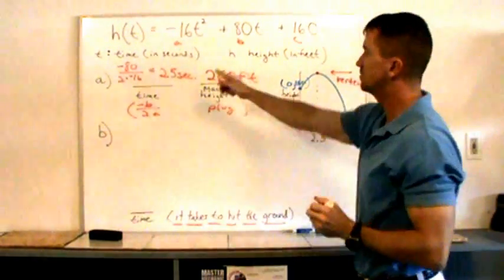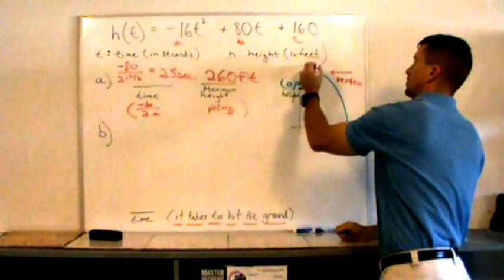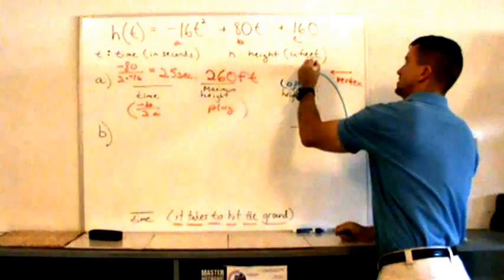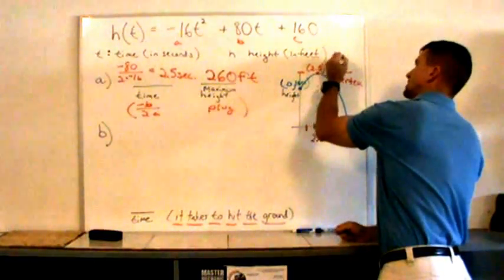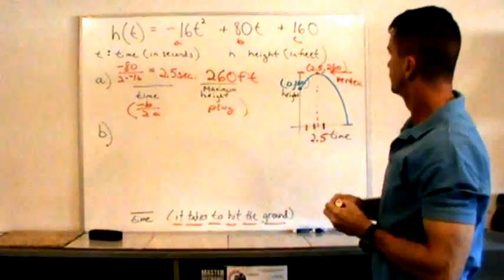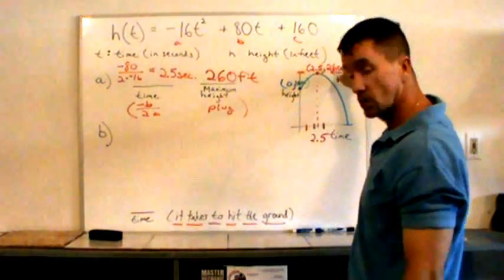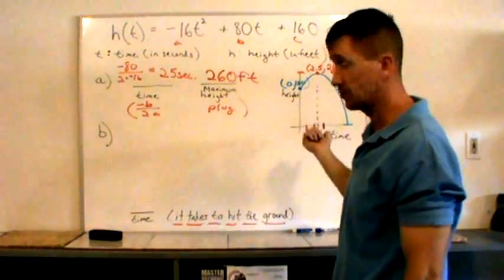That's after you substitute 2.5 into that function. So right here, everyone, it's reached the height of 260 feet. So this is the point 2.5 seconds, 260 feet. Makes sense. At zero seconds, it's at 160 feet. At 2.5 seconds, it's at 260 feet. It's gone up 100 feet. Then the ball's going to go downward.